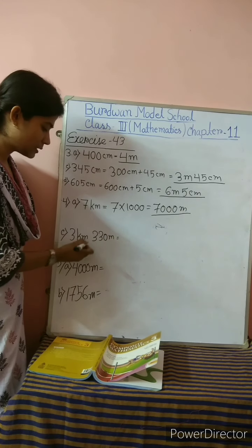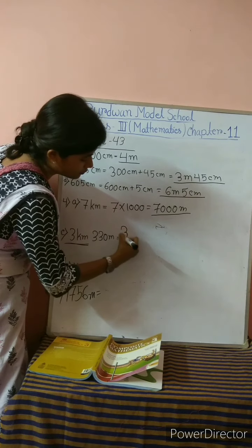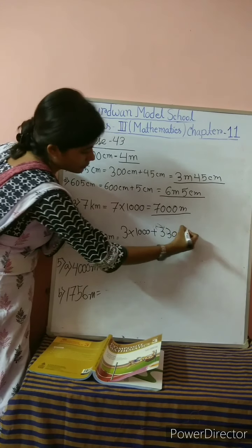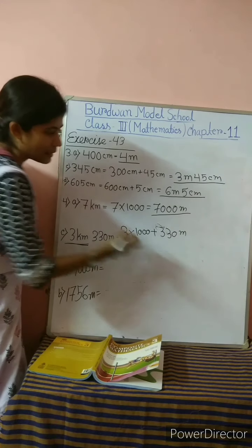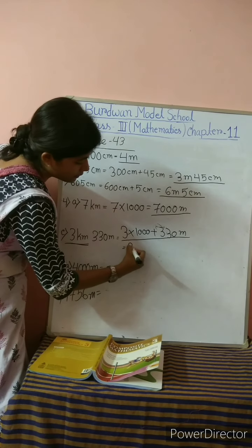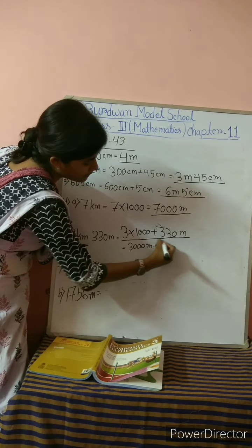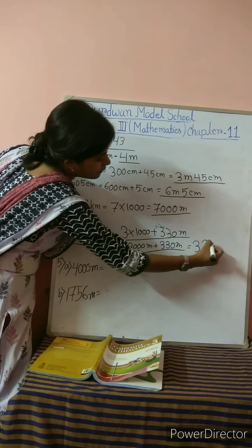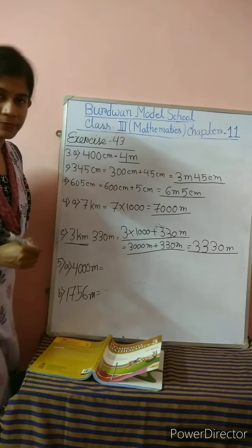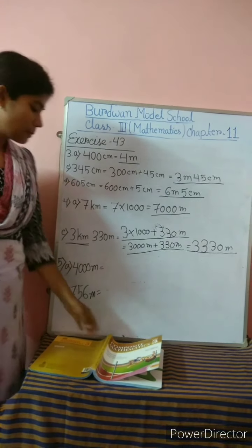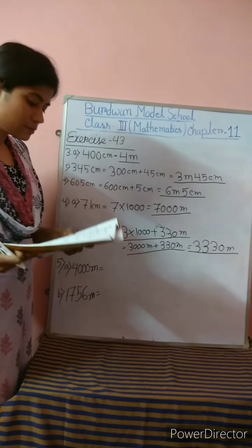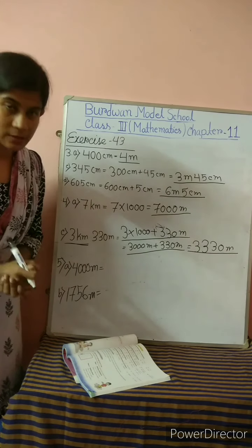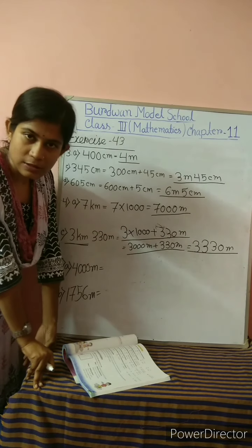Number 4: Convert the following into meters. The unit given here is kilometers. What is the relation between kilometer and meter? 1 kilometer equals 1000 meters. On page 178, rule number 1 and rule number 2, you can see that to convert kilometers to meters, we multiply kilometers by 1000. For example, 7 kilometers: 7 times 1000 equals 7000 meters.